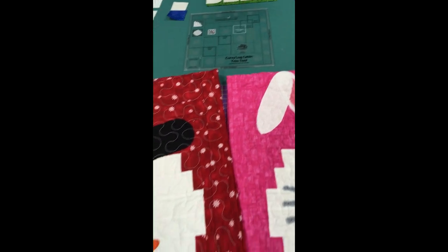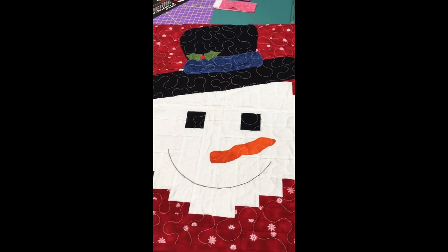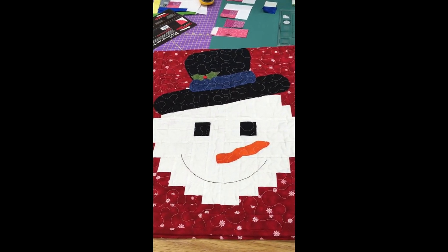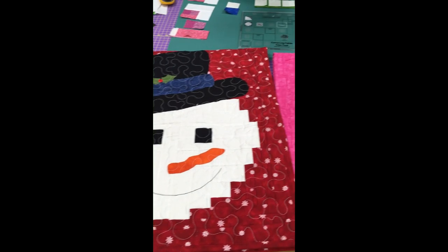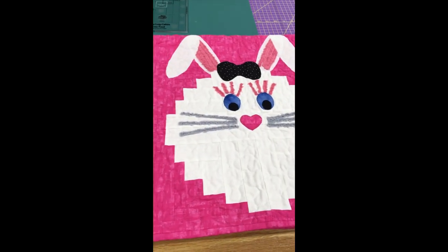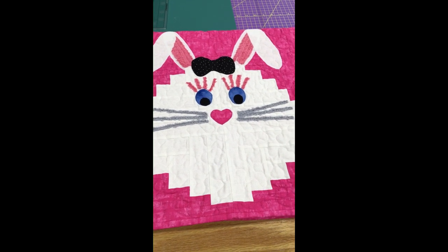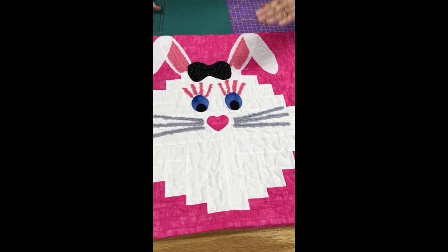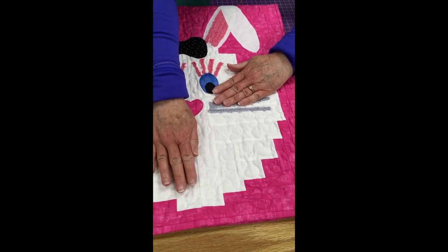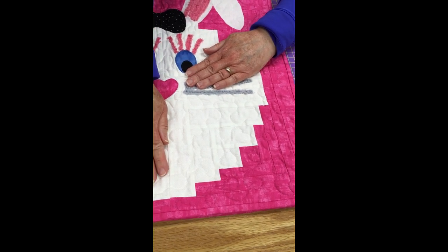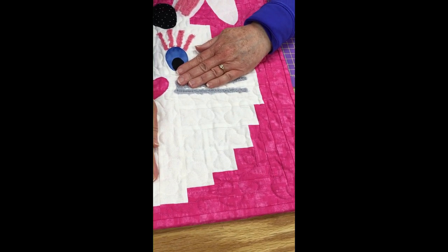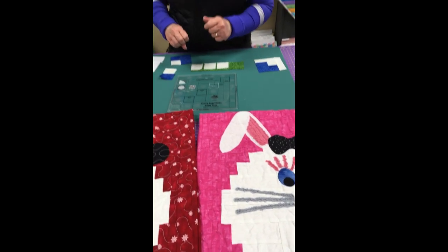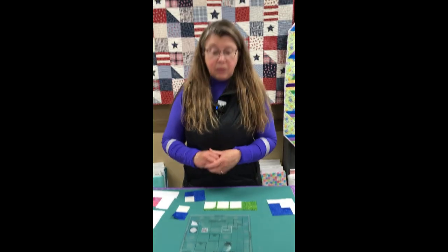I have a couple projects in front of me made with the 8-inch Curvy Log Cabin block. They used the tool to create the curved face for the snowman and the bunny. Your block is from here to here—that's one 8-inch block, and four of them create the face. There are cute options like these, plus lots of pretty serpentine style quilts.